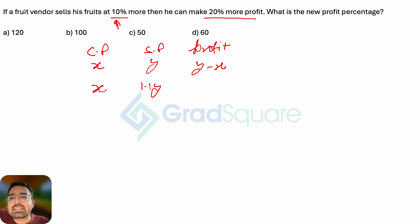Cost price remains the same, which is x. What is his profit now? His profit now will be 1.1y minus x. This is his new profit. This new profit is 20% more than the original profit, so 20% more implies 1.2 times the previous profit, which was y minus x.